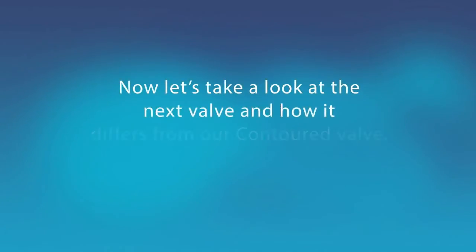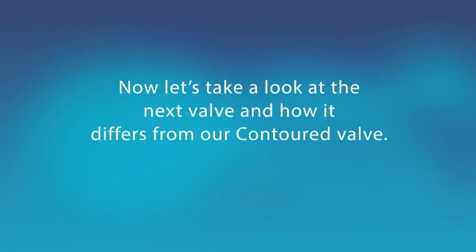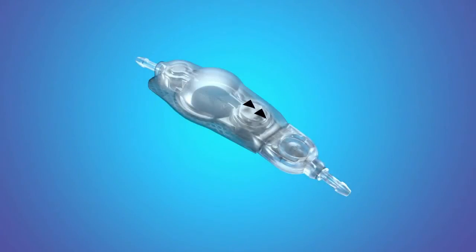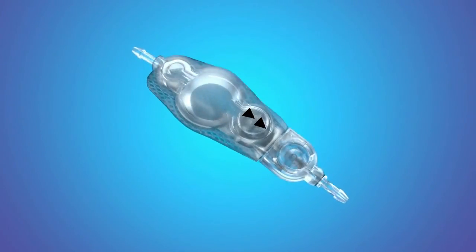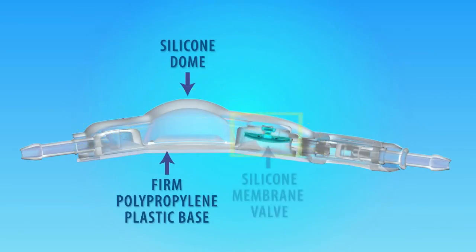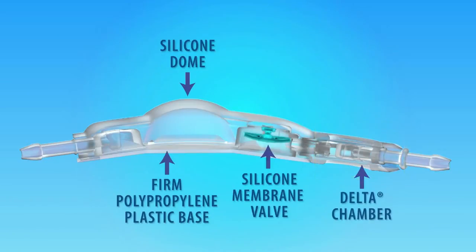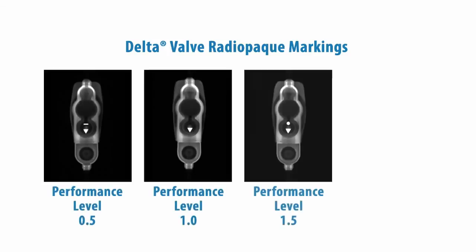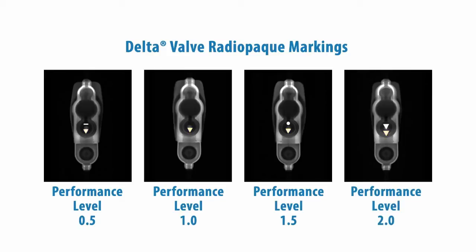Now let's take a look at the next valve and how it differs from our contoured valve. The Medtronic Delta Valve consists of a firm polypropylene plastic base, a silicone dome, a silicone membrane valve, and unlike the contoured valve, it has a distal delta chamber component which provides siphon control when the patient is in an upright position. The Delta Valve also has proximal and distal occluders for selective flushing. Like the contoured valve, the Delta Valve has radiopaque markings; the arrow indicates direction of flow and the marking behind the arrow indicates the valve performance level.